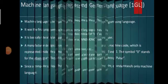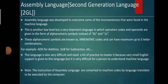Coming to our next slide, that is assembly language. Assembly language is also known as second generation language. After the first generation language was developed, assembly language was developed to overcome some of the inconveniences faced in machine language. In first generation language there were some problems, and to overcome those problems, assembly language was developed.